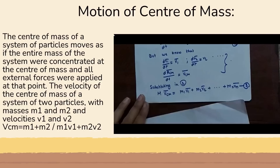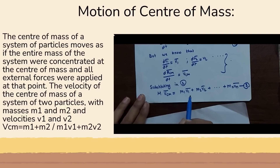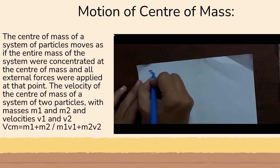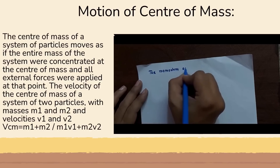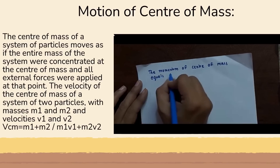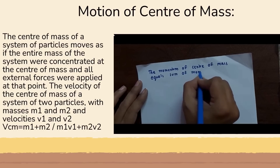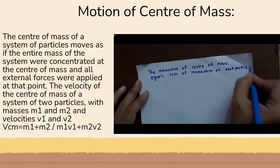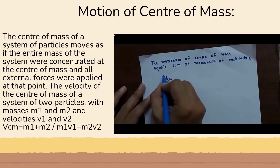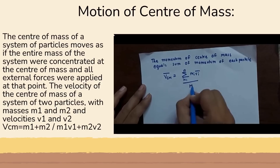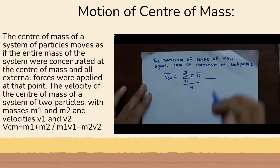M·V_cm = M1·V1 + M2·V2 + ... + Mn·Vn — this is equation 3. Since mass times velocity is momentum, the momentum of the center of mass equals the sum of the momentum of each particle. We can rearrange to get V_cm = (summation from i=1 to N of Mi·Vi) divided by total mass M — this is equation 4.